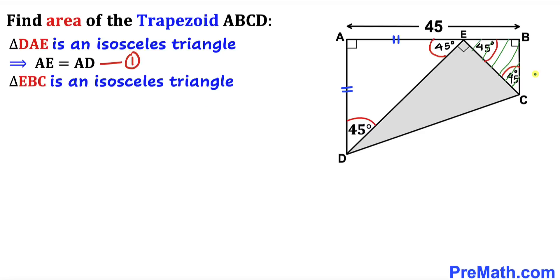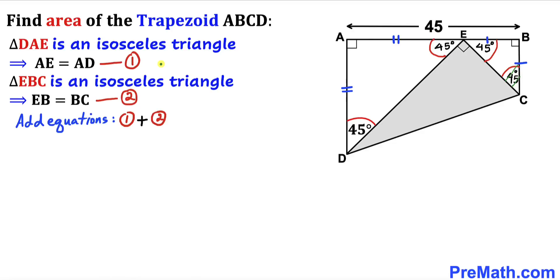For right triangle EBC, it is also isosceles since its two angles are equal, so side EB equals side BC — Equation 2. Adding Equations 1 and 2, the left-hand sides give us AE plus EB, and the right-hand sides give us AD plus BC.